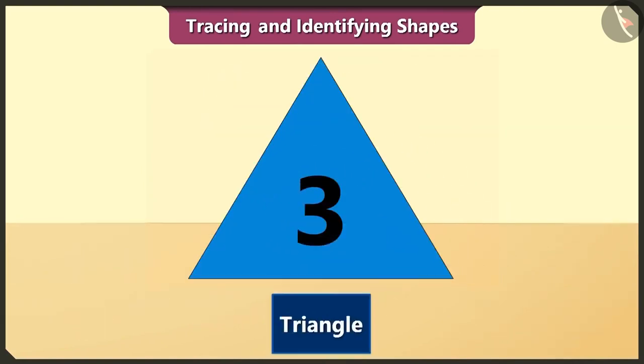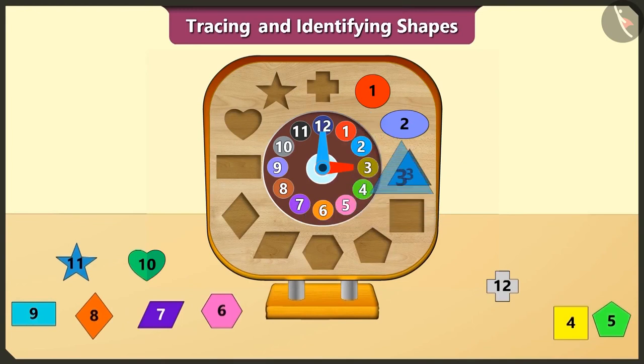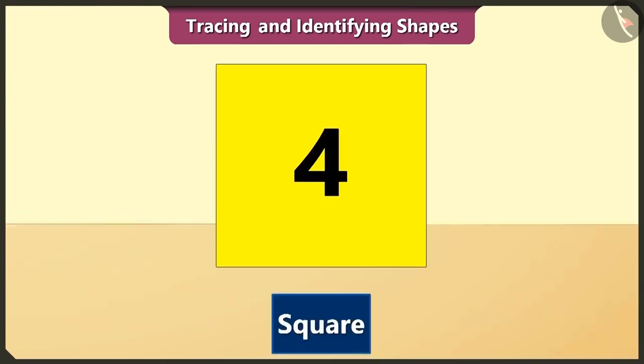The triangle is third in order. A triangle has three sides. The square is fourth in order. The length of all its four sides are the same.